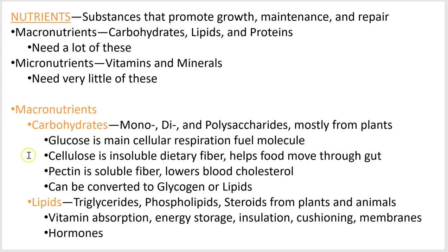Glucose can be converted into glycogen, which is a carb, and into lipids — you can actually do lots of conversions, which we'll look at later. Lipids are fats. A few different classes: the most common ones are triglycerides. When you eat something that has fat — oils, butter, animal fat — that's mostly triglycerides. Phospholipids make up most of our plasma membranes, and steroids act as hormones and chemical messengers.